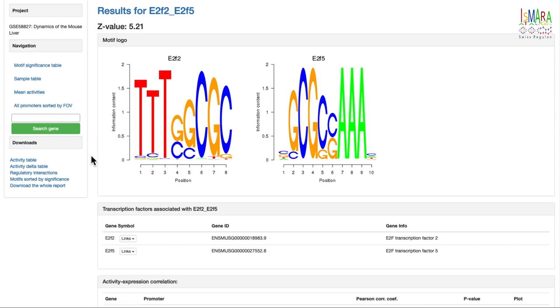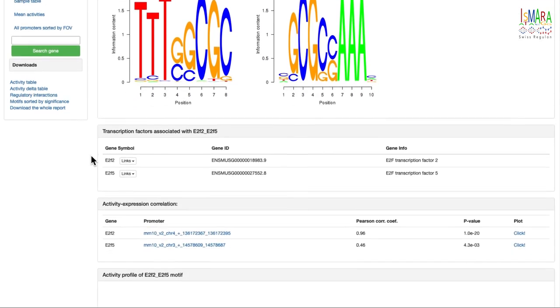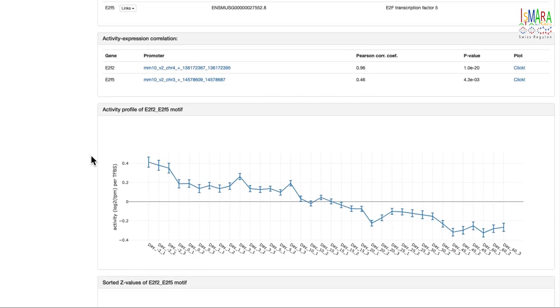The first thing you see on top of this page are sequence logos of the motifs, followed by the transcription factors that are associated with them. In this case, E2F2 and E2F5. Note that ISMARA groups highly similar motifs into motif groups and here the motifs of E2F2 and E2F5, which are practically reverse complements of each other, have been grouped.